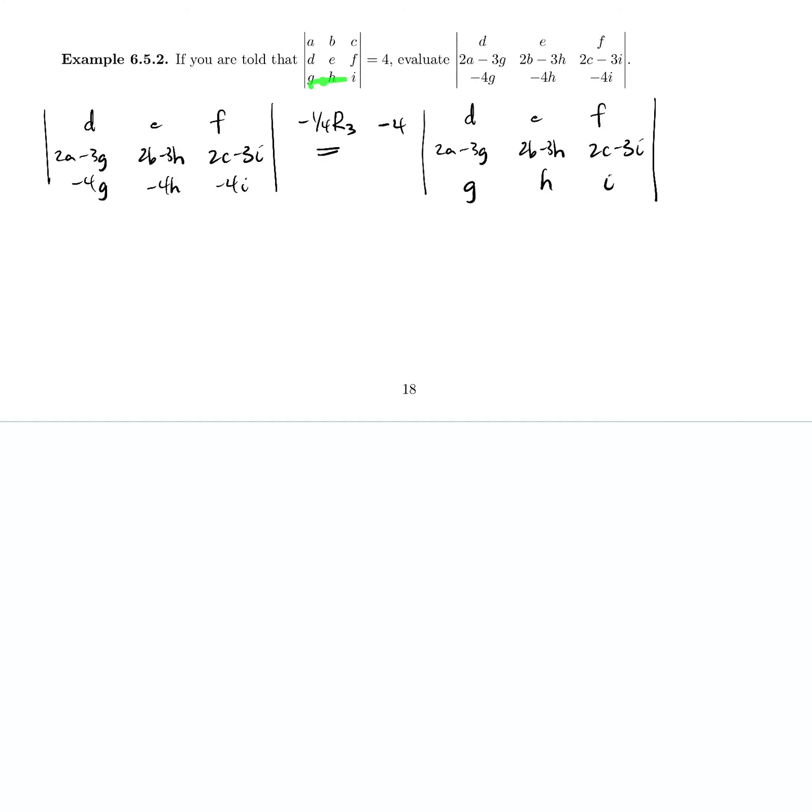So we're getting closer, right? We've got the last row in place. Now we want to try and fix these two rows. So the next operation that I'm going to do is get rid of these minus 3 GHIs here by adding 3 times row 3 to row 2.